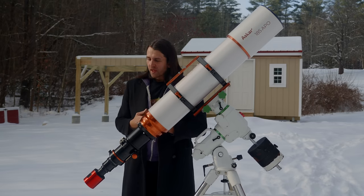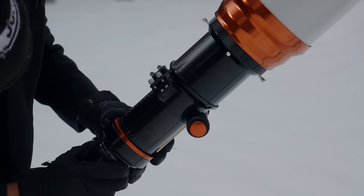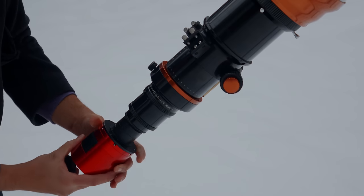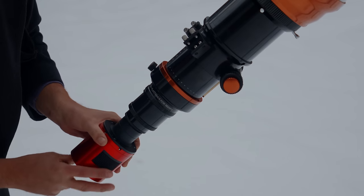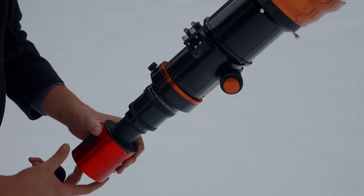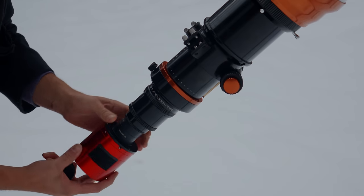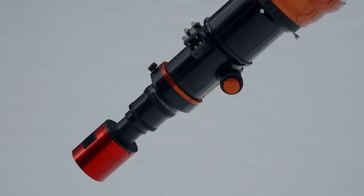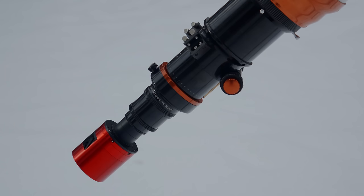There are optional accessories like a 1x flattener and a 0.8x reducer flattener, those are most useful for imaging. To install one of those you just take off the visual back and screw in the flattener. From there you can use the back threads, 48 millimeter threads, you just need 55 millimeter back focus to your camera sensor. I'm using a ZWO camera here, I just use the spacers that are included and that gets me to 55 millimeters. Most cameras will come with spacers or connection diagrams at least to help you get to that 55 millimeter back focus.